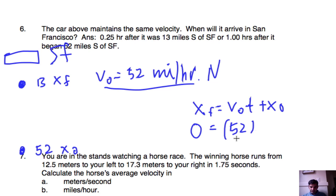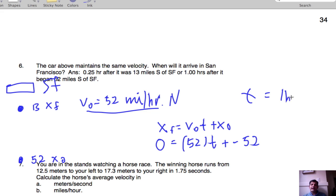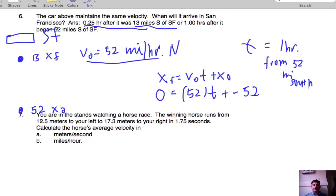We're going 52 miles an hour north. We want to know how much time it's going to take us. And we start at an initial position, which is 52 miles south of San Francisco. So it doesn't take a lot of algebra to see that it's going to take us one hour from 52 miles south to get to San Francisco. If you try doing it the other way, you'll get 13 miles south. You'll actually end up getting 15 minutes or 0.25 hours.